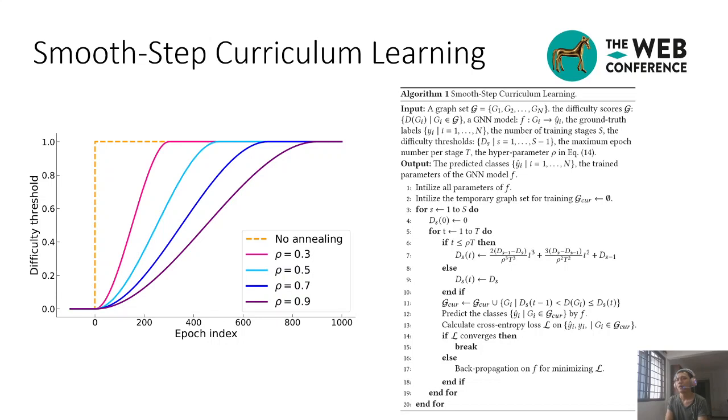At the s-th training stage, we add the graph set in the new bucket to the existing graph subset. Then the graph neural network model is trained to converge on the current graph subset before the next training stage starts.